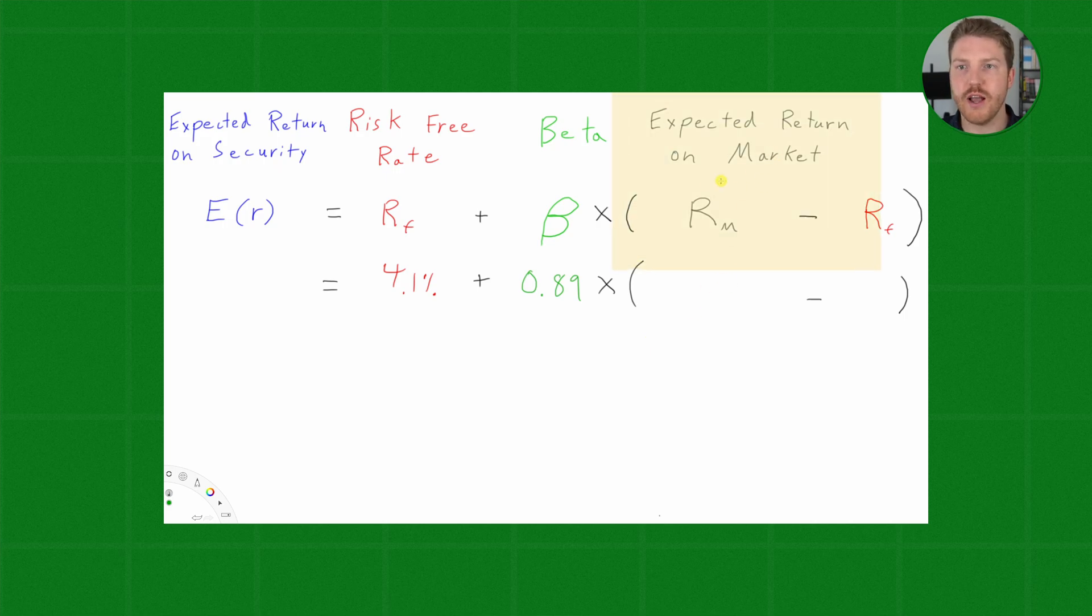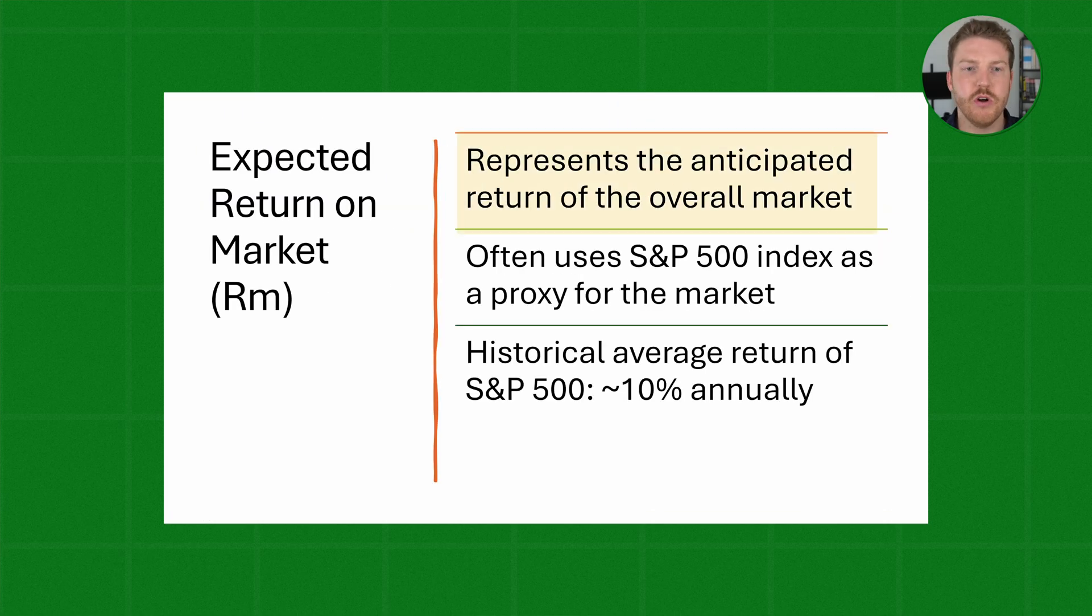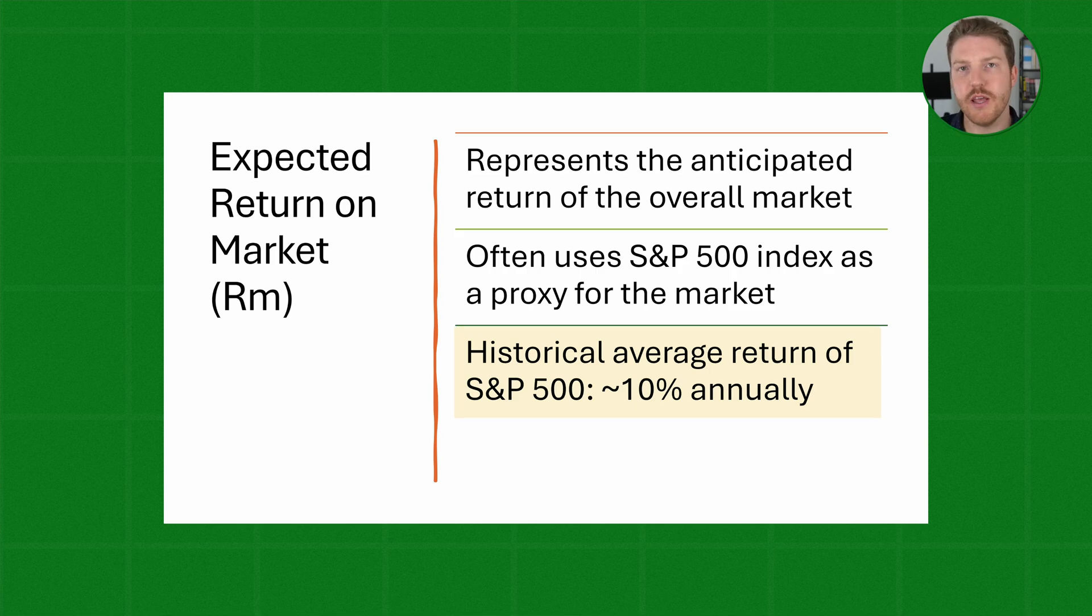which is going to be our expected return on the market, denoted as Rm. The expected return on the market represents the anticipated annual return of the overall stock market. In the field of investments, it's common to use the S&P 500 index as a proxy for the market, and the historical average return of the S&P 500 for roughly the last 30 years is about 10% annually.